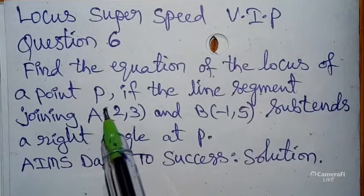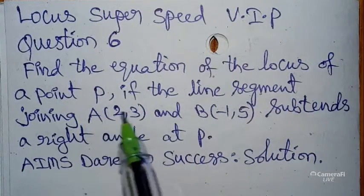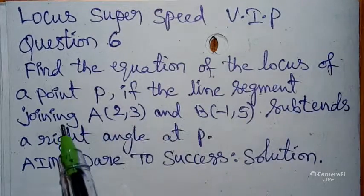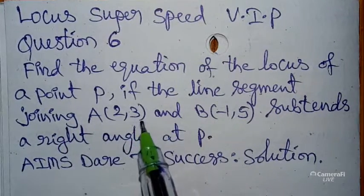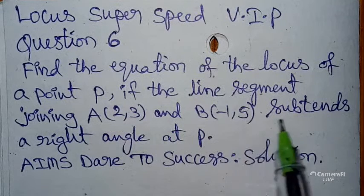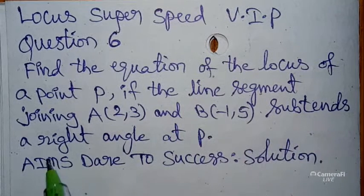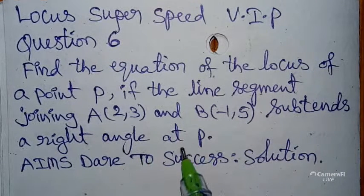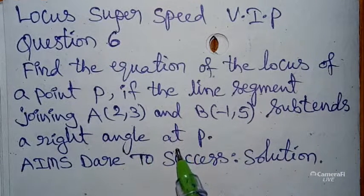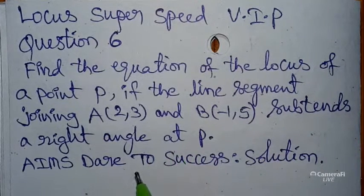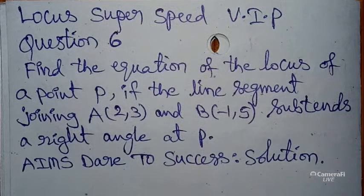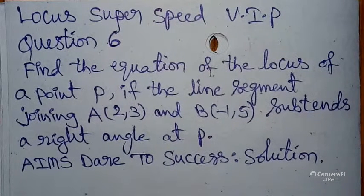Today our question is: find the equation of the locus of a point P if the line segment joining A(2, 3) and B(−1, 5) subtends a right angle at P. This is a highly demanded question from students.